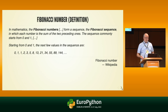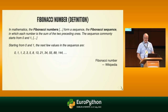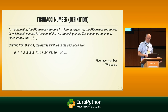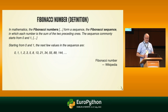The next value is simply the addition of the previous two. So zero is the first Fibonacci number, one is the second, and the third is the sum of zero and one, which is one again. The next value is the sum of one and one, which is two. Then one plus two makes three, two plus three makes five, three plus five makes eight, and so on. That's how you build up the Fibonacci sequence.